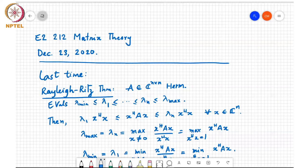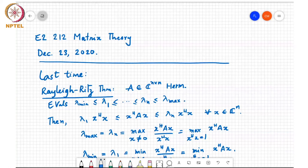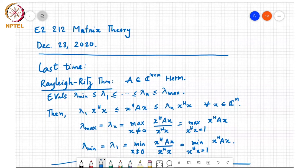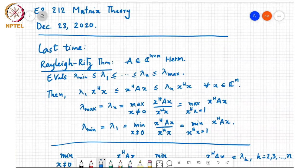Furthermore, both the lower bound and upper bound are achievable. That is, there exists an x for which this lower bound is achieved and a different x for which the upper bound is achieved. And that is given by this next two statements here, namely that lambda max, which is equal to lambda n, is the maximum value of x-Hermitian Ax over x-Hermitian x for x not equal to 0, which can also be written in this way.